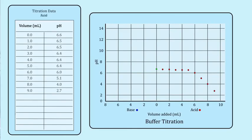Here for example, you can see that the buffer maintains a steady pH of about 6.4, until you get to 6 milliliters of acid being added, and then the pH starts to drop. So 6 milliliters of acid it drops to 6, 7 milliliters of acid it drops to 5, and it just keeps dropping.